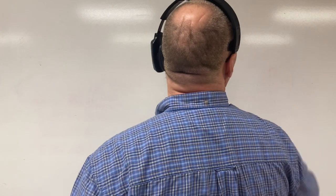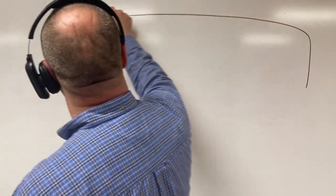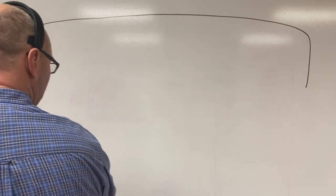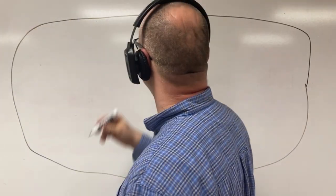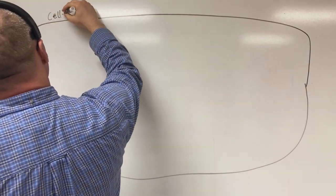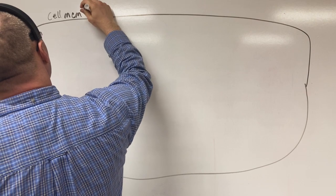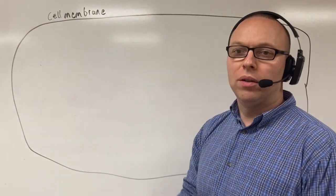Good afternoon, welcome back to another episode of the Dr. Perkins Podcast. Today we're going to be talking about cells. One of the things you have is your cell membrane. We're going to draw this huge cell right here, and this is your cell membrane. This controls what is allowed to go into and out of the cell.